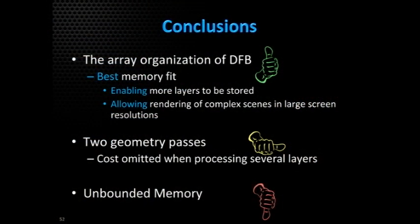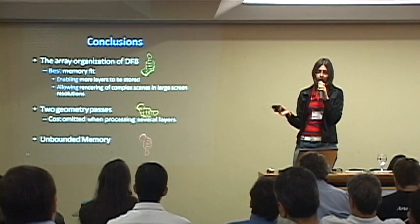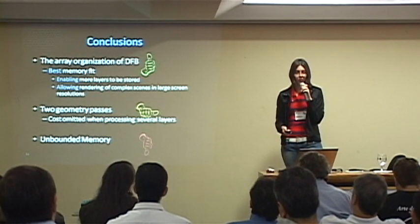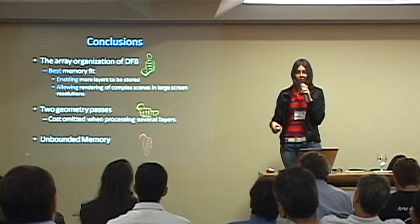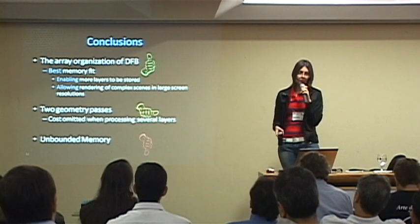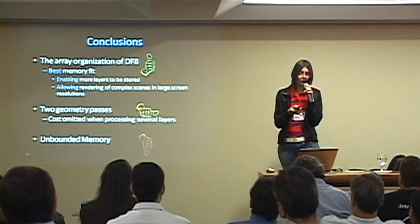In conclusion, we propose a technique to handle more transparent layers using the least memory possible. This allows us to handle larger scenes at larger resolutions. Our method requires two geometry passes to do that, while the other methods have only one, but the additional cost is somewhat mitigated by the memory savings.